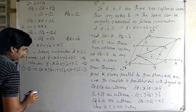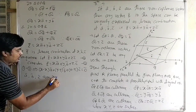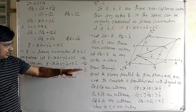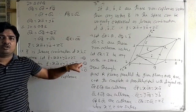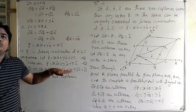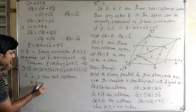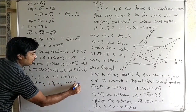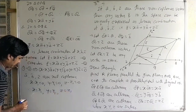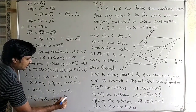Since a-bar, b-bar, and c-bar are not coplanar, but their linear combination is zero, that means the scalars must all be zero. Therefore X − X₁ equals 0, Y − Y₁ equals 0, and Z − Z₁ equals 0. And therefore X equals X₁, Y equals Y₁, and Z equals Z₁. That means r-bar equals X·a-bar plus Y·b-bar plus Z·c-bar is unique.